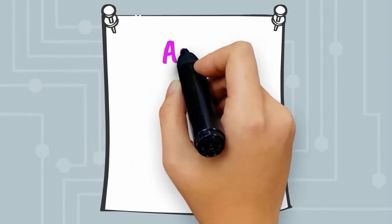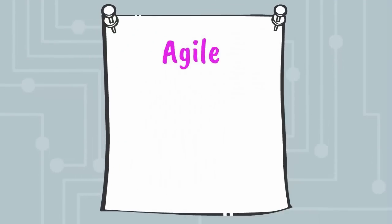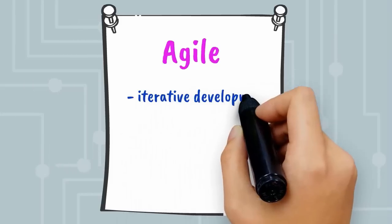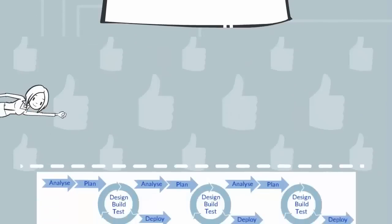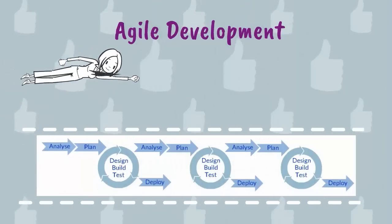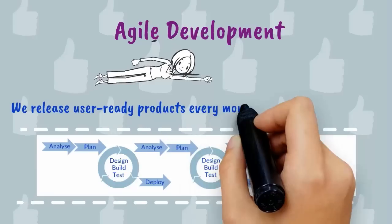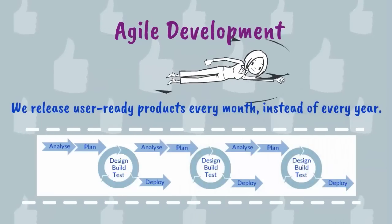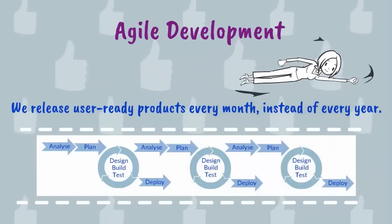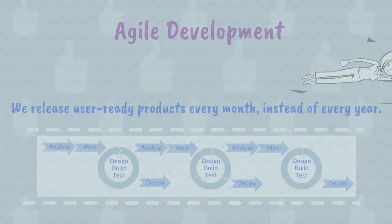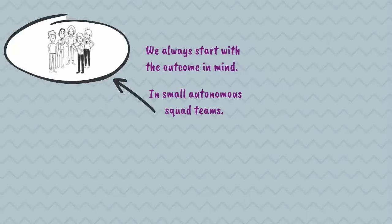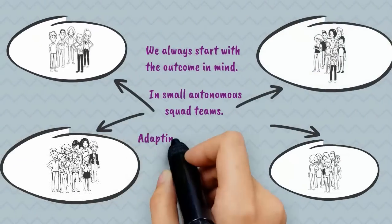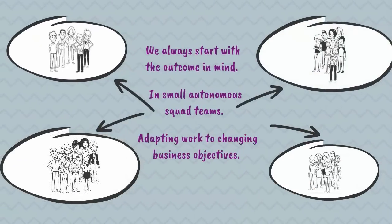In addition to IBM Design Thinking, we apply Agile methodology to our development cycle. Agile's core concepts are iterative development, risk management, and transparency. By applying Agile development, we can release user-ready products every month instead of every year. We always start with the outcome in mind, working in small autonomous squad teams, adapting work to changing business objectives.